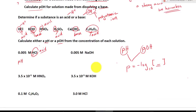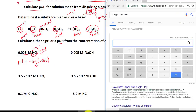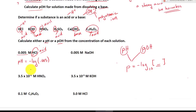Let's do an example. For an acidic solution with a concentration of 0.005 M, we take the negative log of 0.005. Plugging this into a calculator — negative log of 0.005 — gives us a pH equal to 2.3.